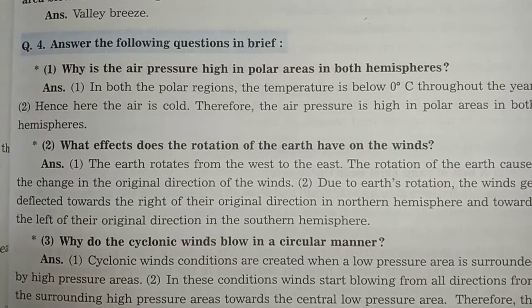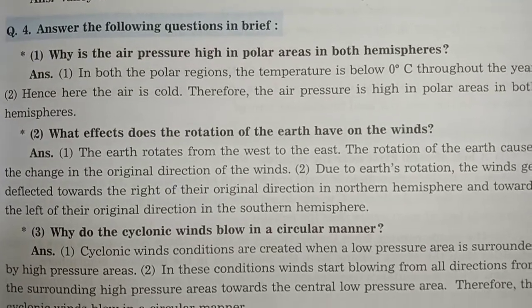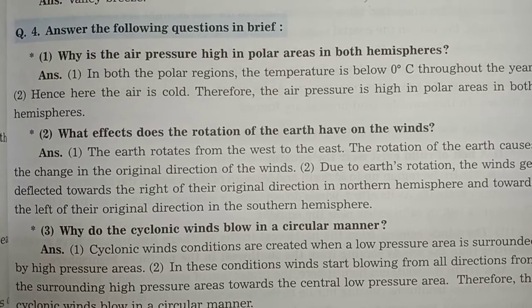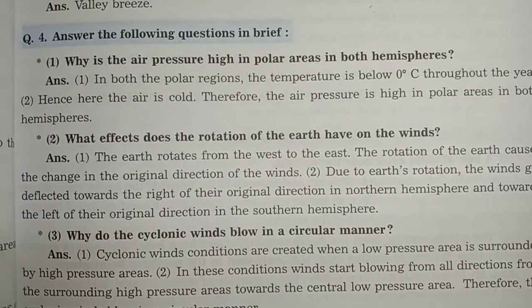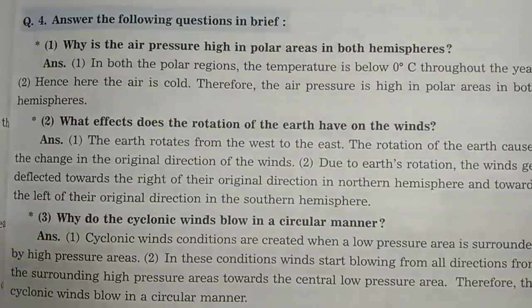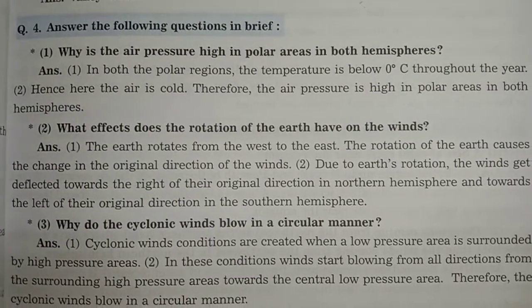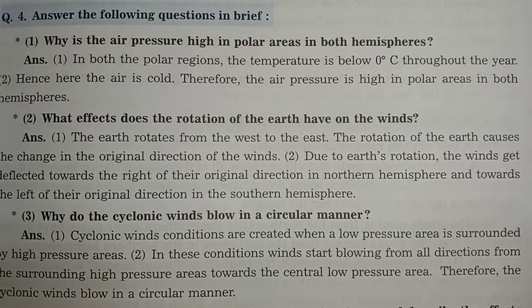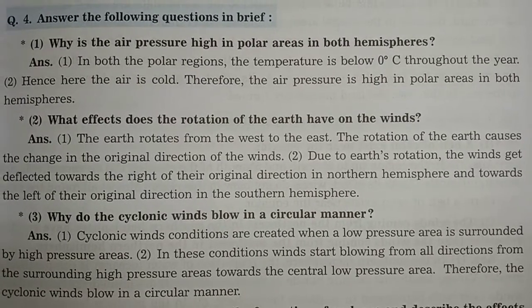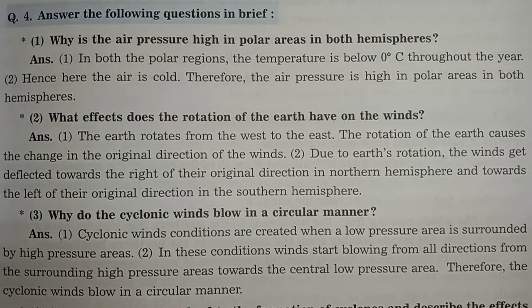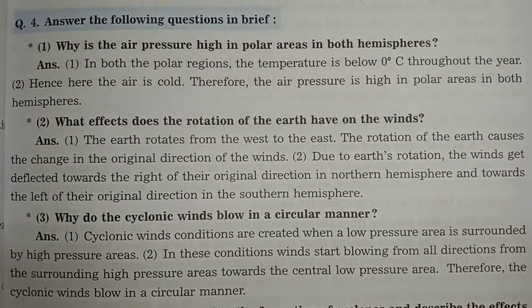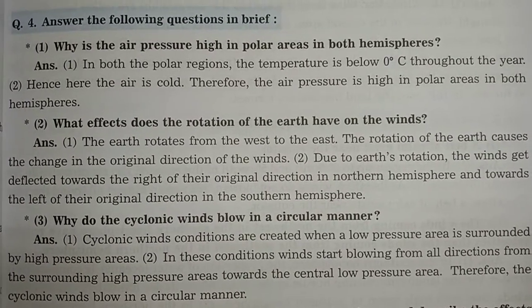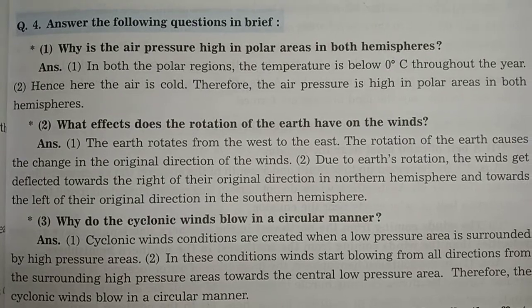Now a few questions to note down. Why is the air pressure high in the polar area in both hemispheres? In both polar regions, the temperature is below 0 degrees Celsius throughout the year. Hence the air is cold, and therefore the air pressure is high in the polar area in both hemispheres.